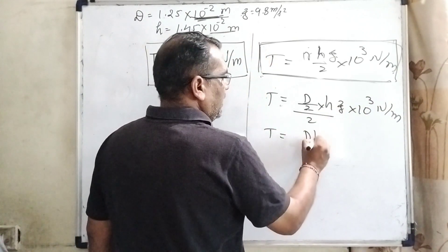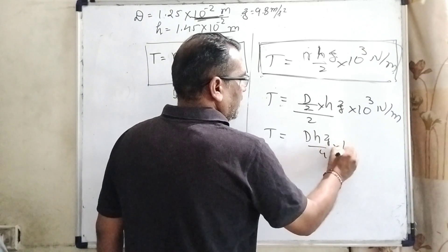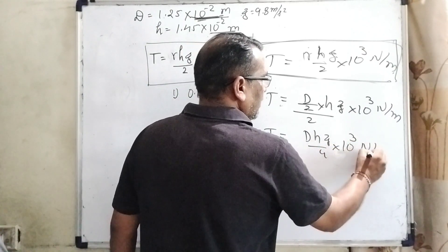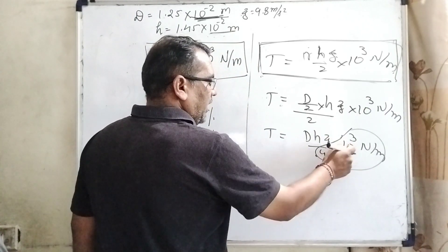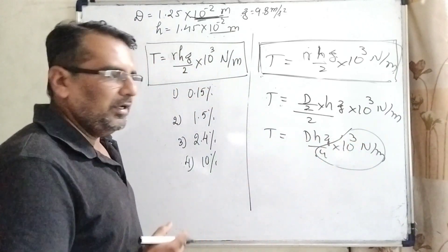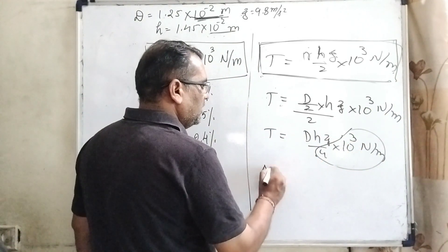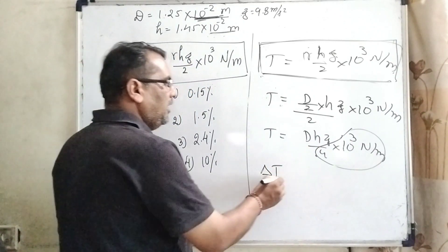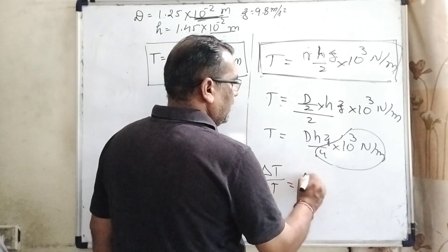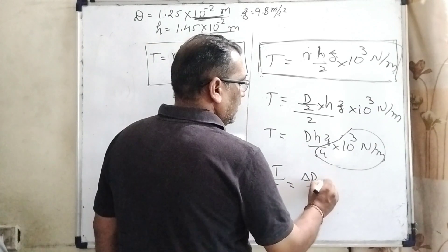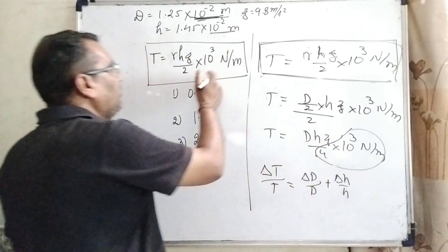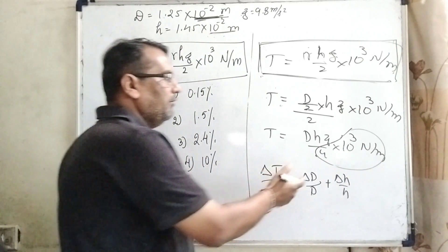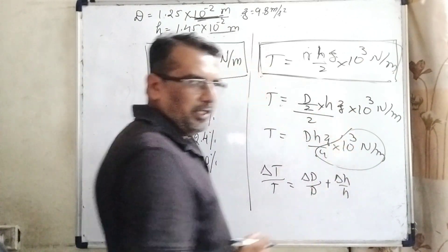T equal to DHg by 4 into 10 raised to power 3 Newton meter. So here, all these values are constant, 4 into 10 raised to power minus 3, it can be neglected. And now, using the formula of error, delta T by T equal to delta D by D plus delta H by H. And g is constant, so therefore, no need to put here.